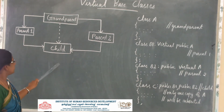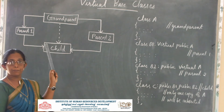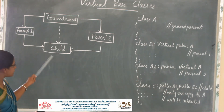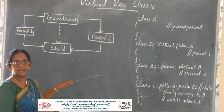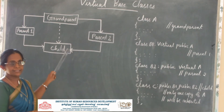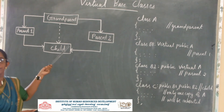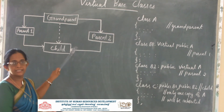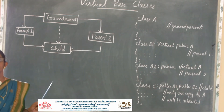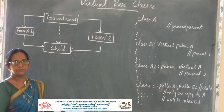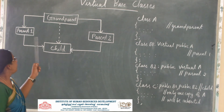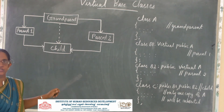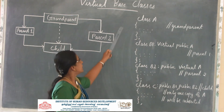This means the child class has two copies of the protected and public members of the grandparent in its object. Having two copies of the same members creates a problem called ambiguity. We should avoid that problem. To avoid it, we can declare the base class grandparent as virtual.